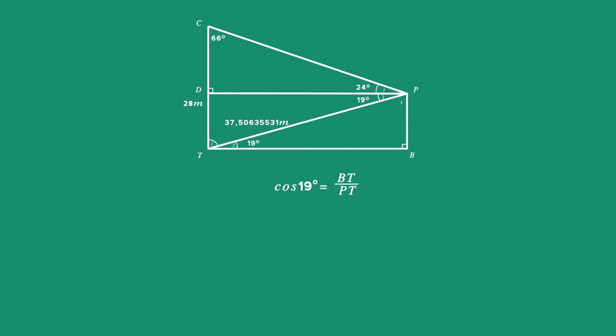Using the definition of cosine adjacent over hypotenuse, we get cos 19 degrees is equal to BT divided by PT. Get BT by itself by multiplying both sides of the equation by PT and you get BT is equal to cos of 19 degrees multiplied by PT. Use your calculator to get BT is equal to 35.5 meters.